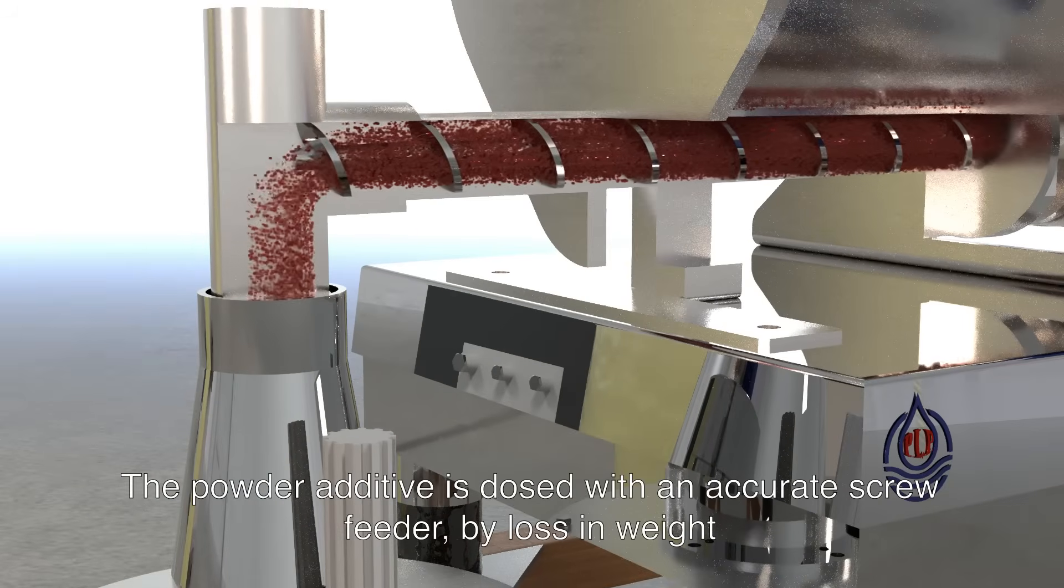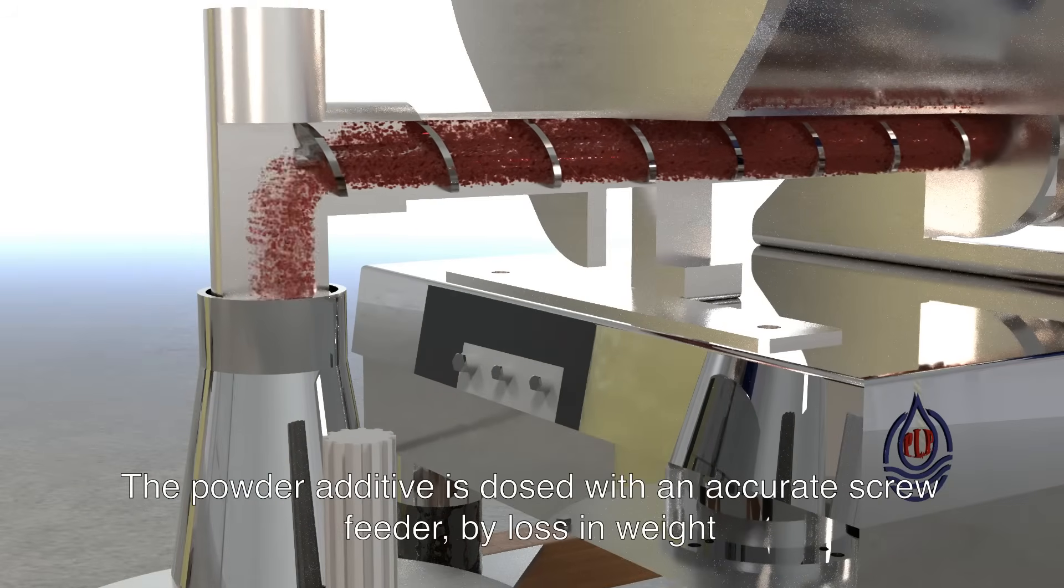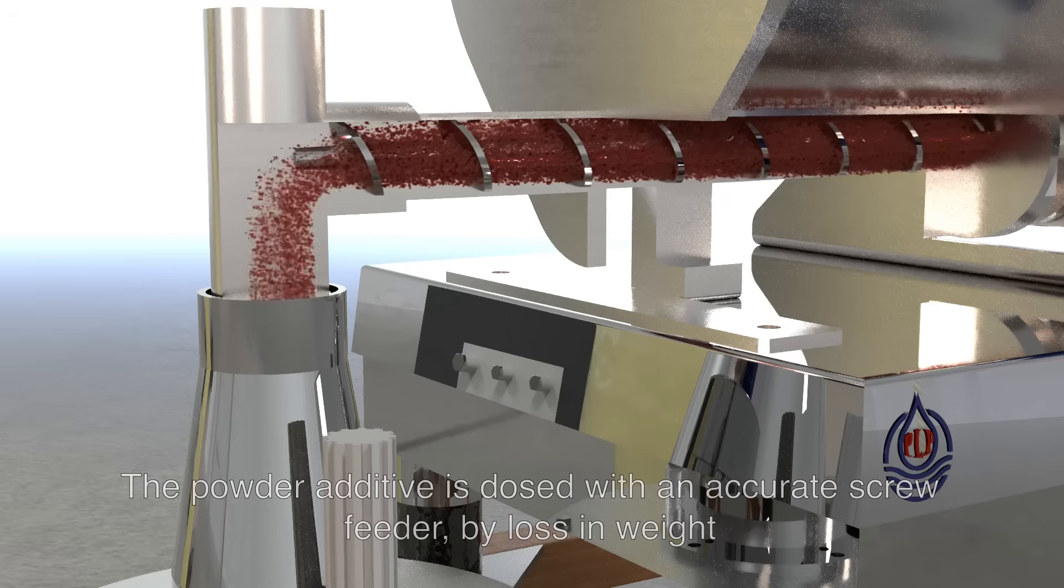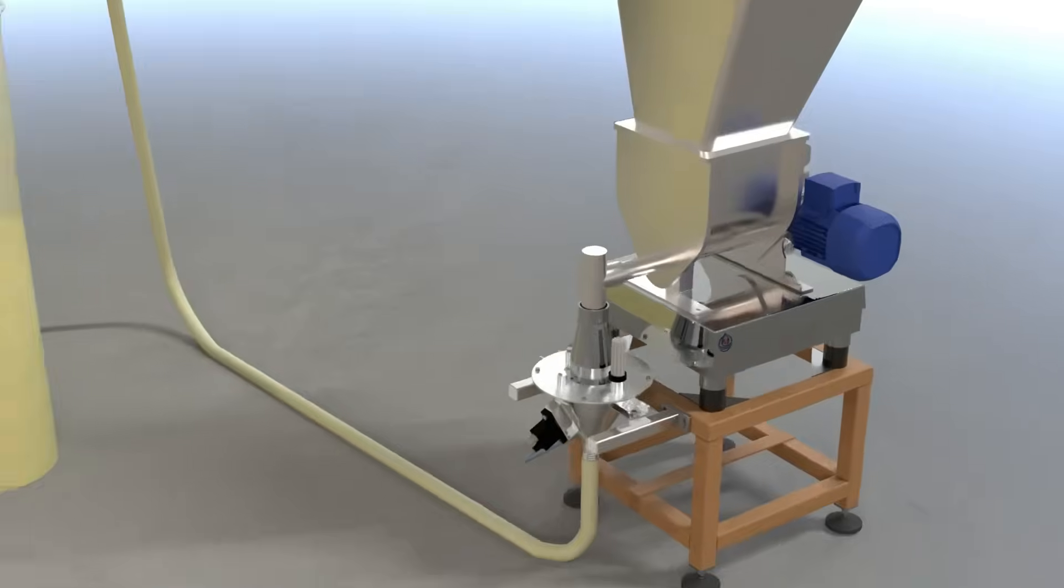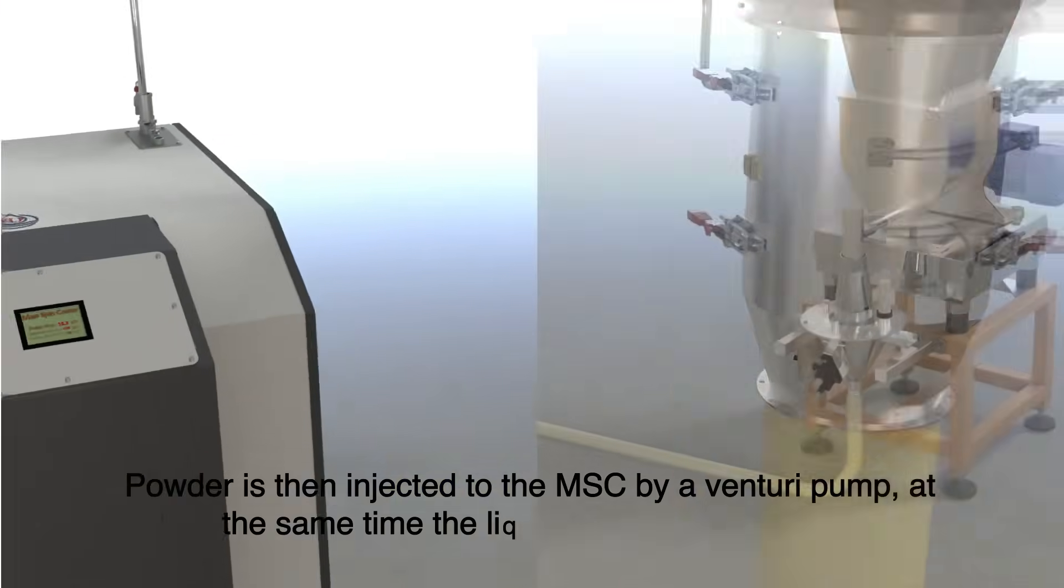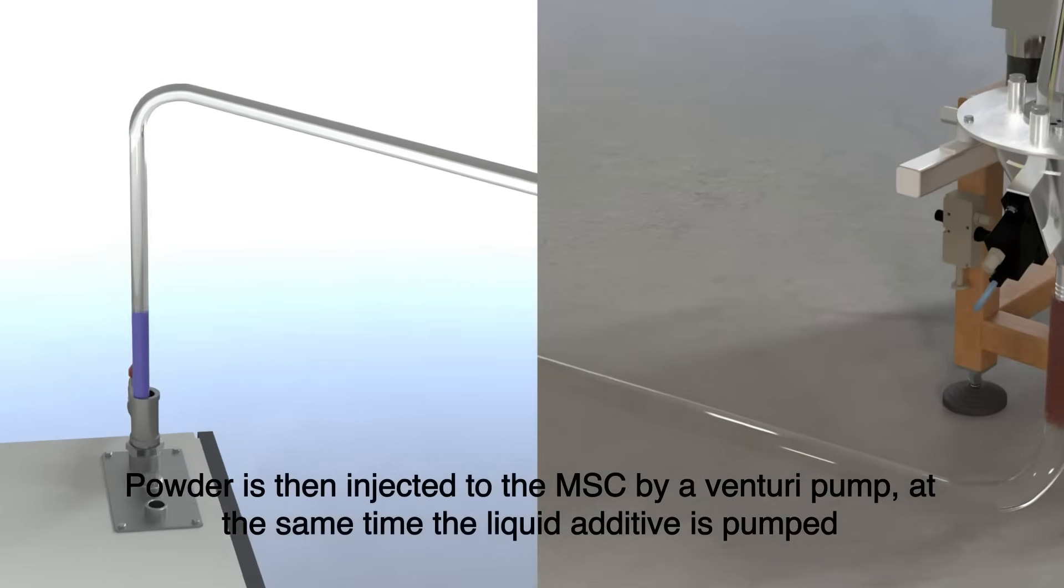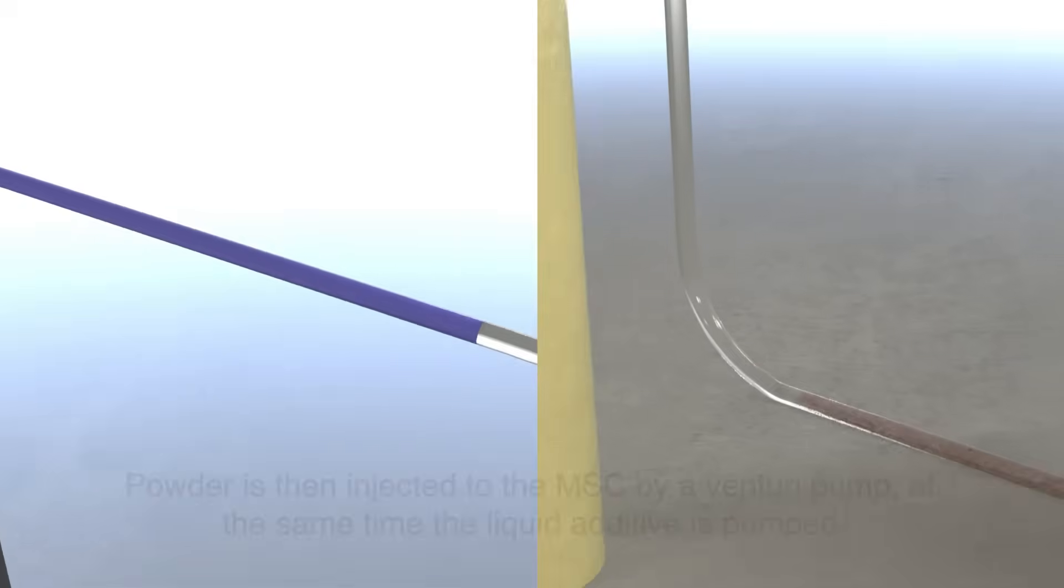The powder additive is dosed with an accurate screw feeder, by loss in weight. Powder is then injected to the MSC by a venturi pump, at the same time the liquid additive is pumped.